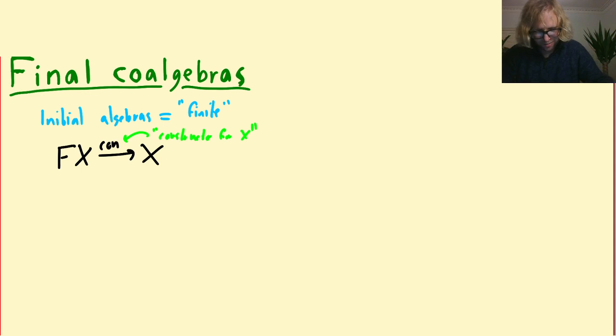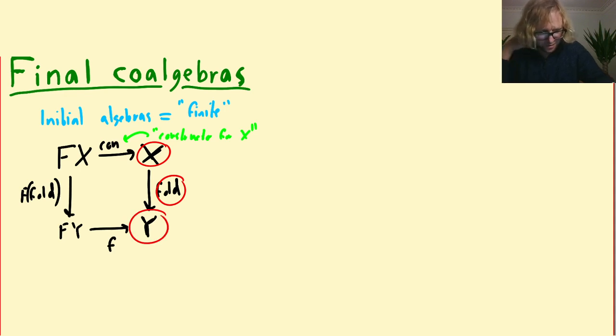And the reason that we are allowed to do that is because if this is the initial algebra, that means that if we have any other algebra like this, then we should get a unique map, which is usually called fold, which goes from X into Y, such that it preserves the structure, which means that this diagram commutes. So that means that this X here has to be as small as possible because there has to be a fold to every other Y. So if you make the X too large, then you wouldn't be able to make such a structure preserving map into a smaller Y. So you have to only put things in here that you have to in order to be closed under this constructor.